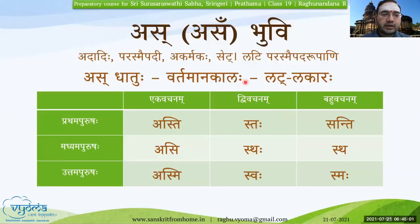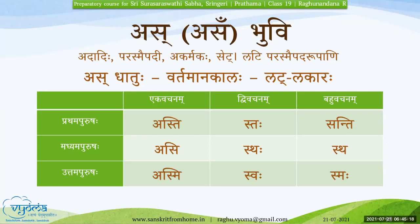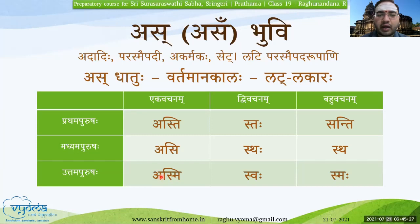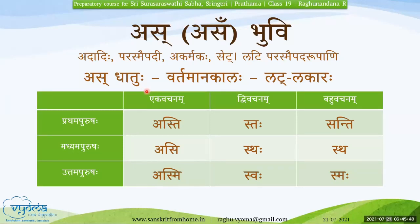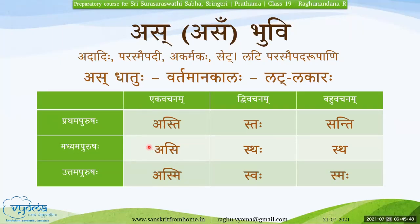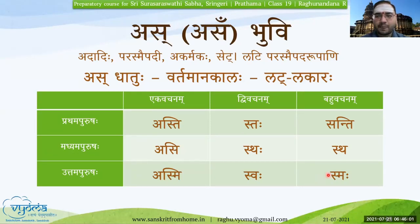Now we shall proceed with the Kriya Padani. Arun Ennin, namaste. Please read the title and then while telling the forms, say them with Saha, Tau, Te, Tvam, Yuvam, Yuyam and Aham, Avam, Vayam. As Dhatuhu, Vartamana Kalaha, Lat Lakara. Saha aste. Tvam asi, yuvam sthaha, yuyam stha, aham asmi, avam svaha, vayam smaha. Very good, well recited.